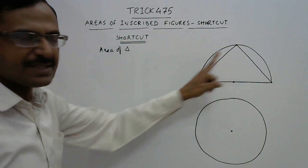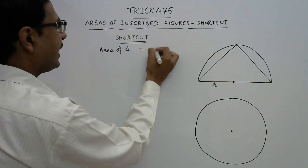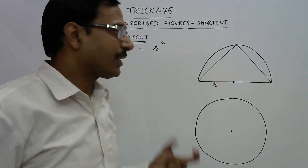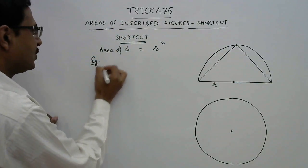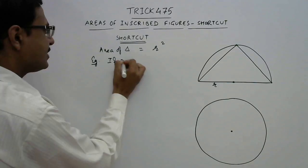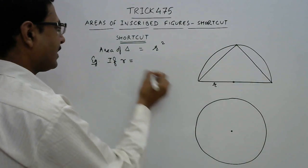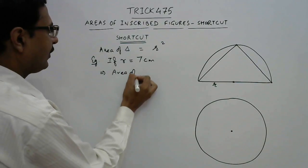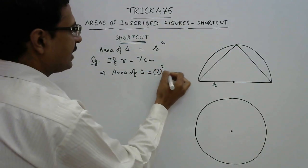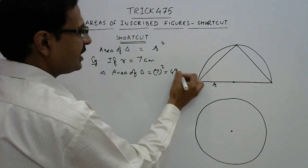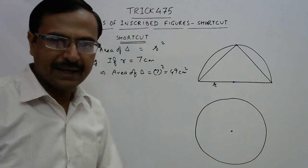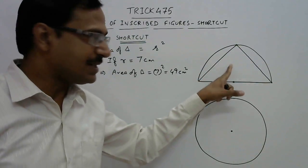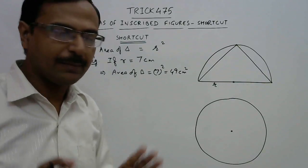The shortcut for finding the area of a triangle inscribed in a semicircle is directly r squared — the square of the radius. For example, if the radius of the semicircle is given as 7 centimeters, then the area of the triangle will be 7 × 7 = 49 square centimeters. You don't need to apply any lengthy method.